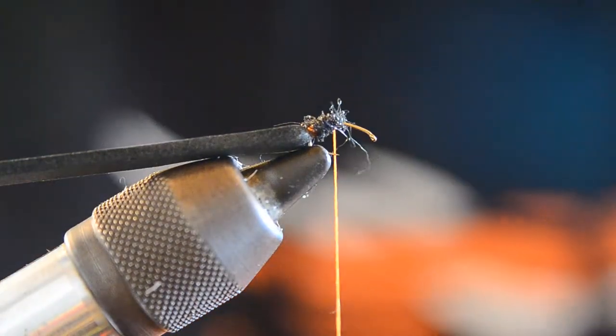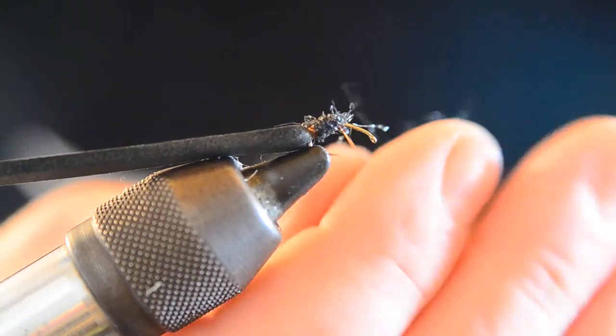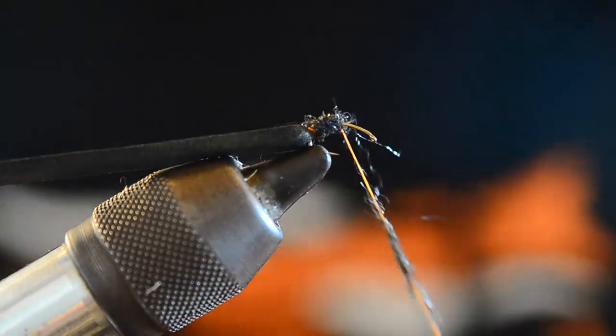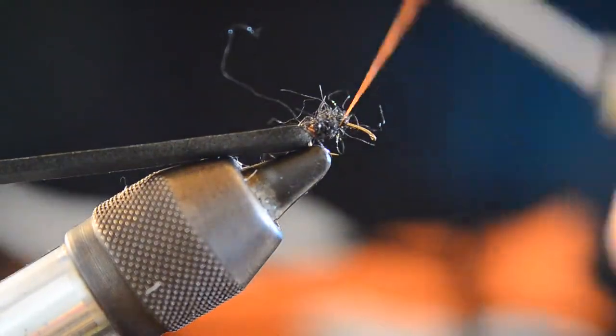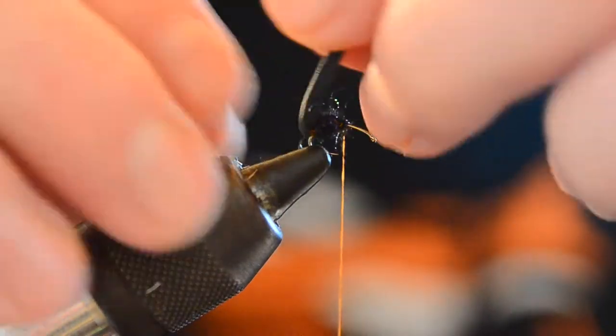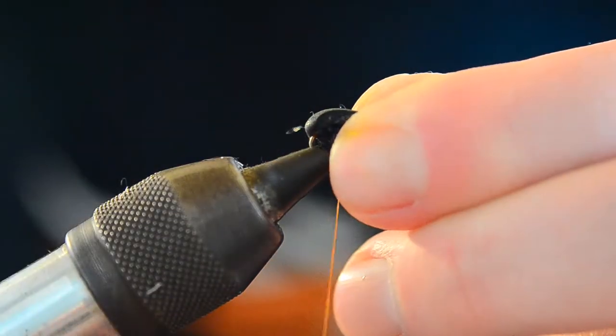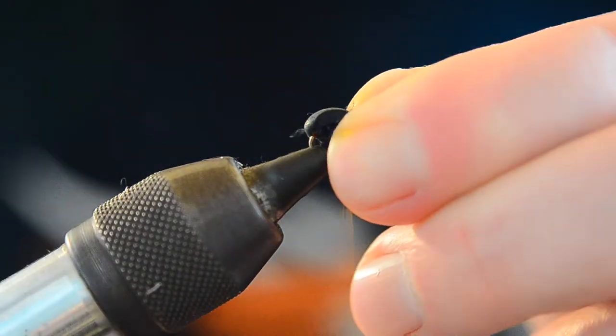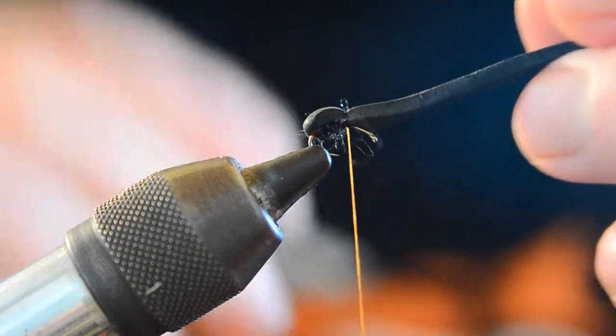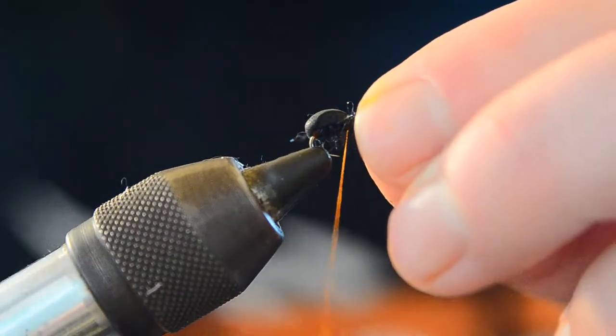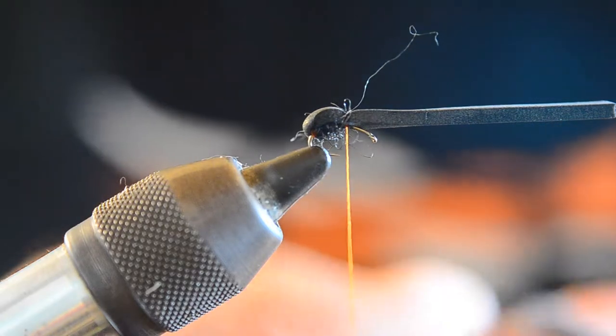We're going to use a little bit of this black ice dub, build a little bump in the back, kind of a little round ball here. Then we'll pull the foam over. We want to pull it fairly tight, right in the middle of the hook, cinch it down. That gives us our back little bubble or ball of the ant body.